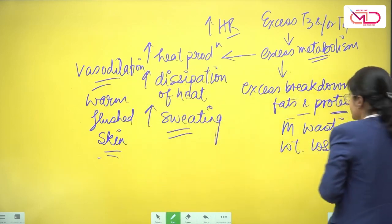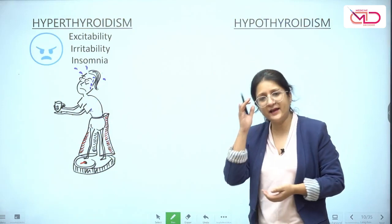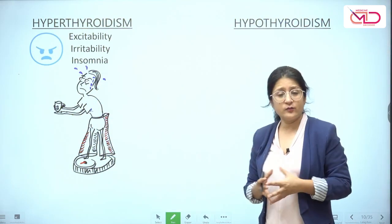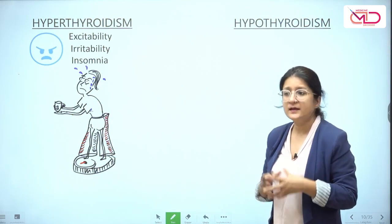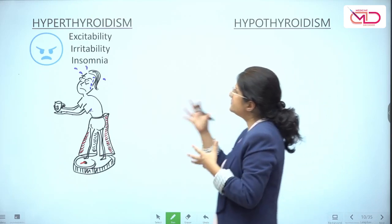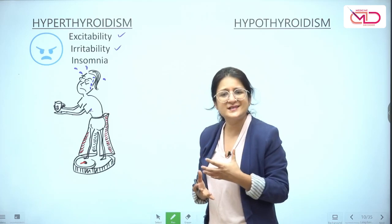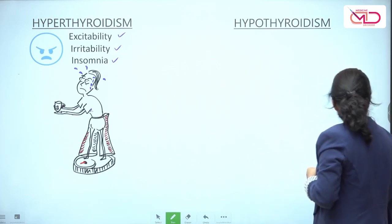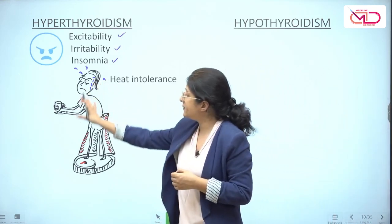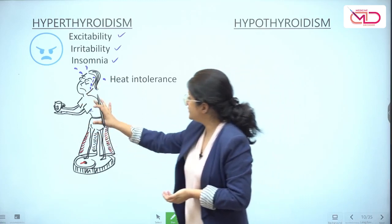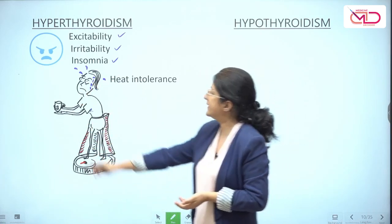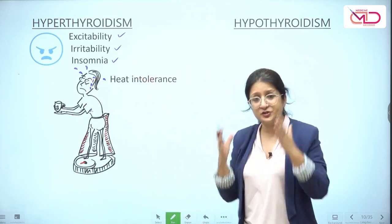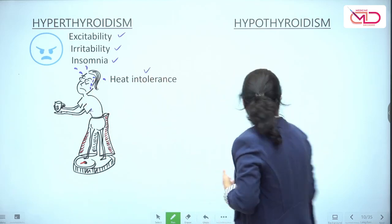Apart from those symptoms, there are also symptoms pertaining to the central nervous system. Thyroid hormones are responsible for mental alertness and brain metabolism, so there are symptoms like excitability, irritability, inability to sleep, and insomnia. In hyperthyroidism you can see a diagrammatic representation of an emaciated person standing on a weighing scale, sweating profusely. There is heat intolerance and increased heat production.